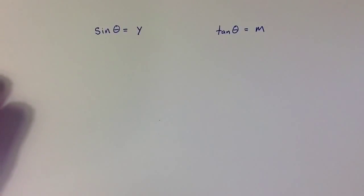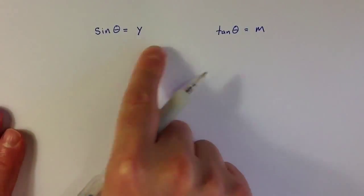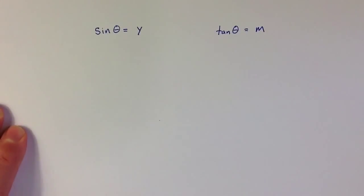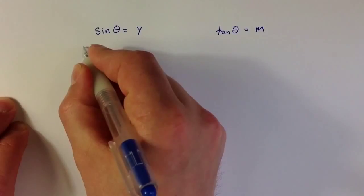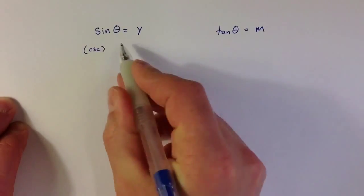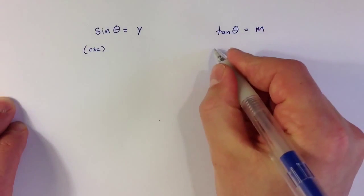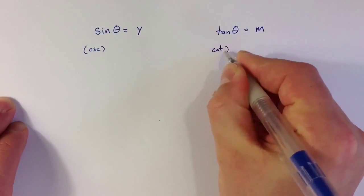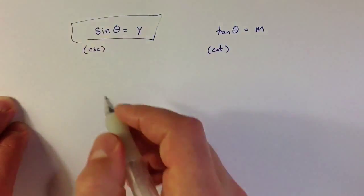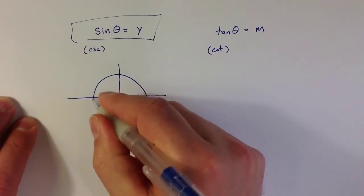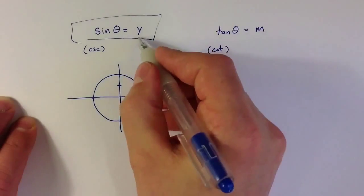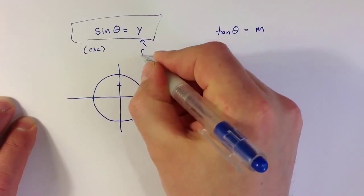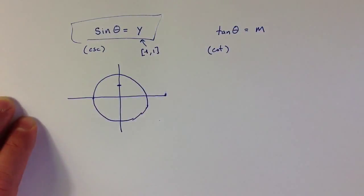Let's take a look at a couple of other generic examples to see how a similar process works for sine and tangent. I should also mention this process would work for cosecant and cotangent: the process for sine is related to cosecant, and the process for tangent is related to cotangent. If I have an equation sine of theta equals y, the solution corresponds to some y-value on the unit circle — the y-value must be between 1 and negative 1 to be a valid sine ratio.